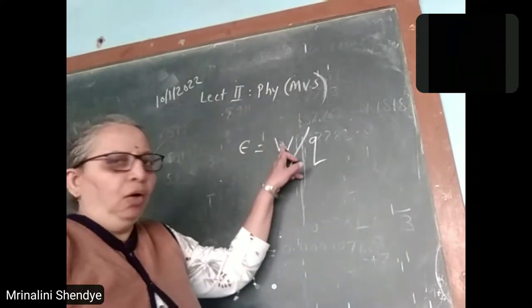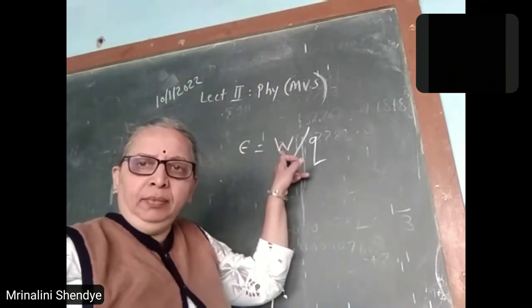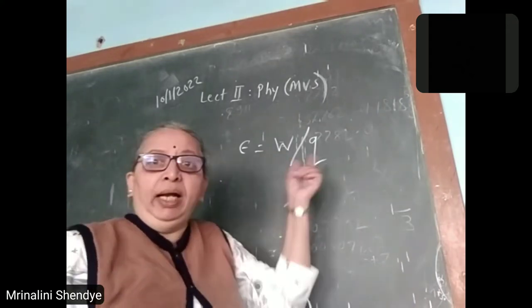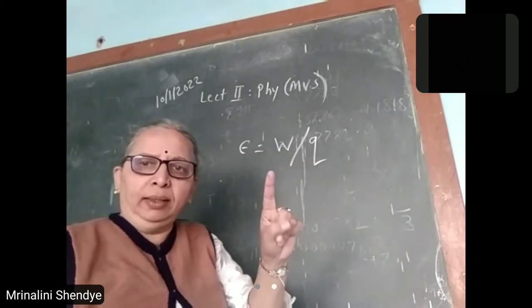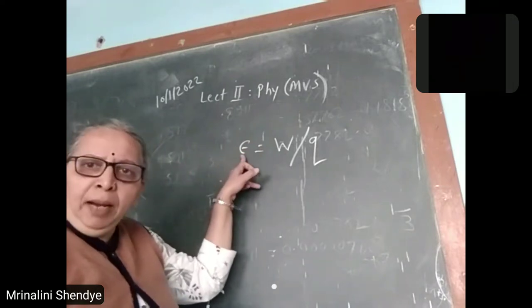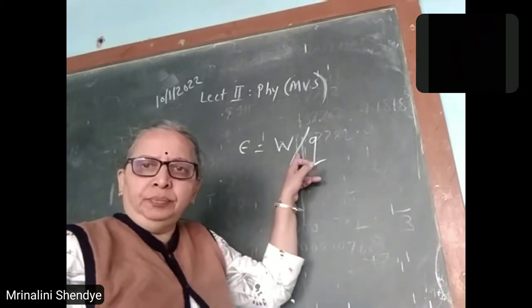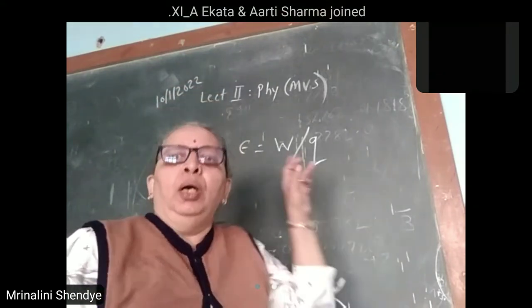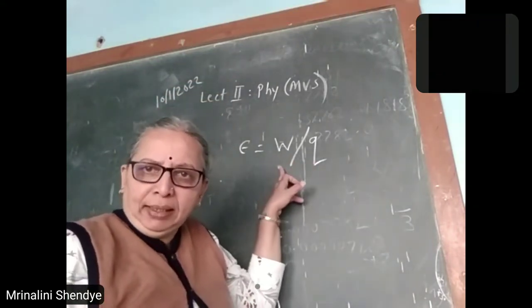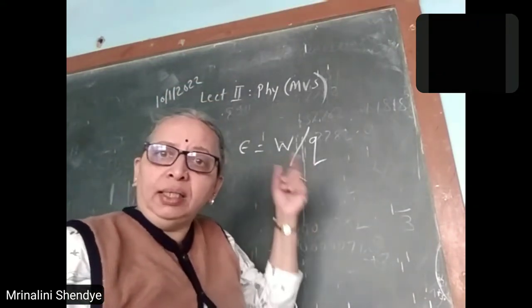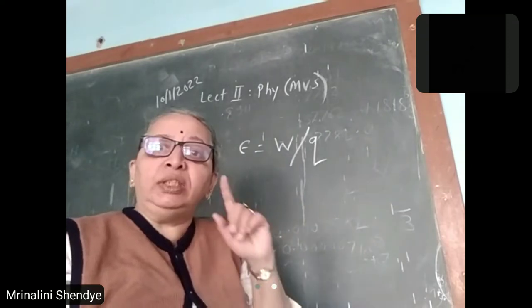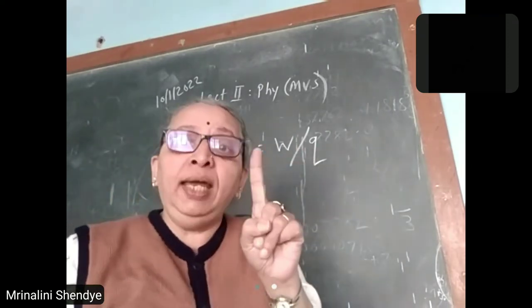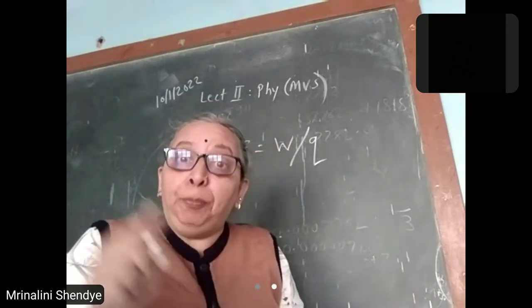Energy supplied or work done by the source of EMF to circulate unit charge is called EMF. If Q is equal to 1, EMF will be the work done. EMF of a cell is defined as energy supplied by the cell, or work done by the cell, to circulate unit charge — 1 Coulomb charge — only once round the complete circuit.